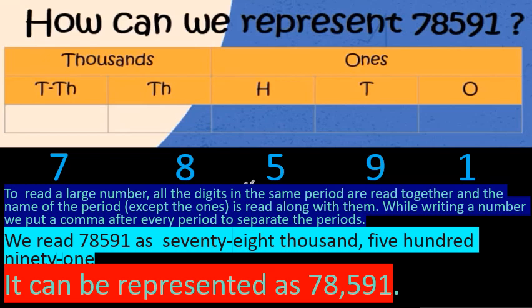Since we are reading a 5-digit number, the place value chart is divided into two periods. One period and the other is the thousands period. The ones period is divided into three places: ones, tens, and hundreds. The thousands period is divided into two places: thousands and ten thousands.